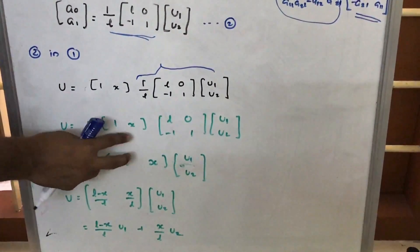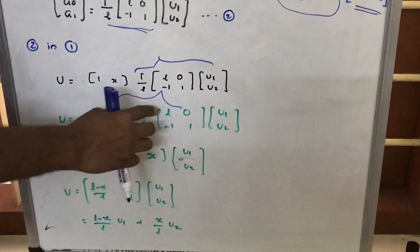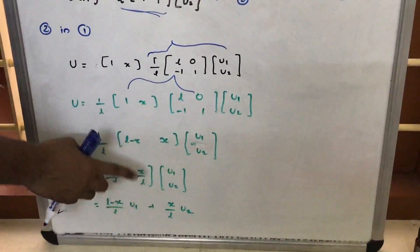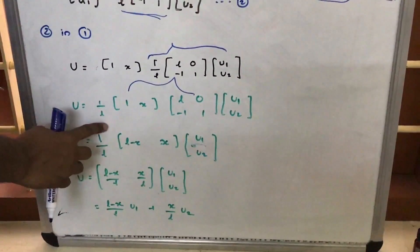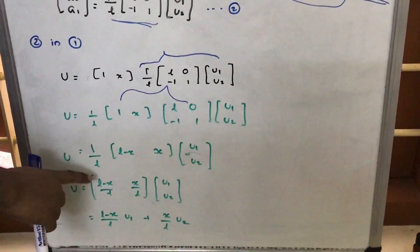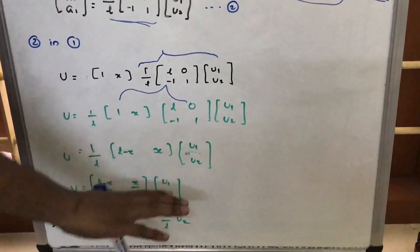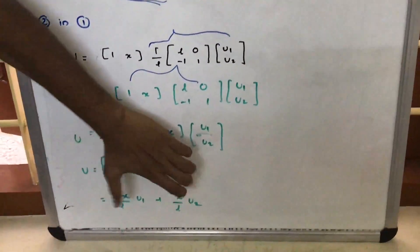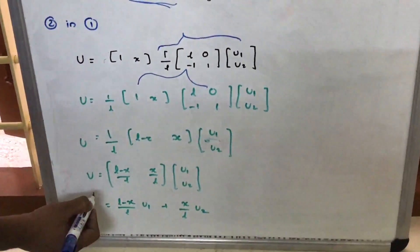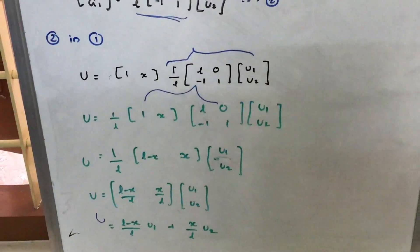On rearranging and multiplying these two matrices, we get (L - x) and x, with 1/L outside the bracket. Taking it inside the matrix, we finally get u = [(L-x)/L, x/L] * [u1, u2]. Or written in equation form: u = ((L - x)/L) * u1 + (x/L) * u2.